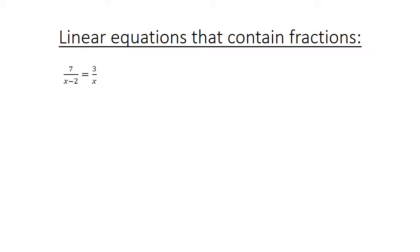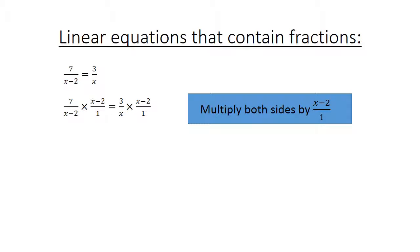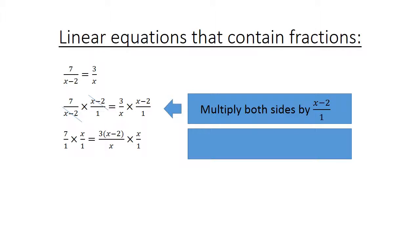Linear Equations that contain fractions. We have 7 divided by x minus 2, equals 3 over x. Now we multiply both sides by the same fraction: x minus 2 over 1 on both sides. Since x minus 2 divided by x minus 2 equals 1, we have 7 remaining. We then multiply both sides by x over 1, and since x divided by x equals 1, we get 7x equals 3x minus 6.